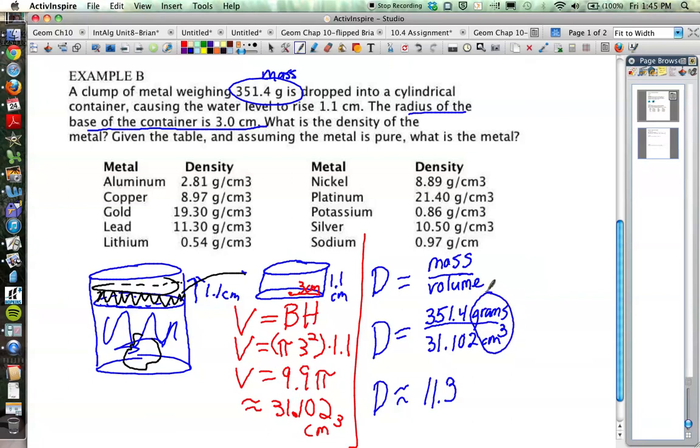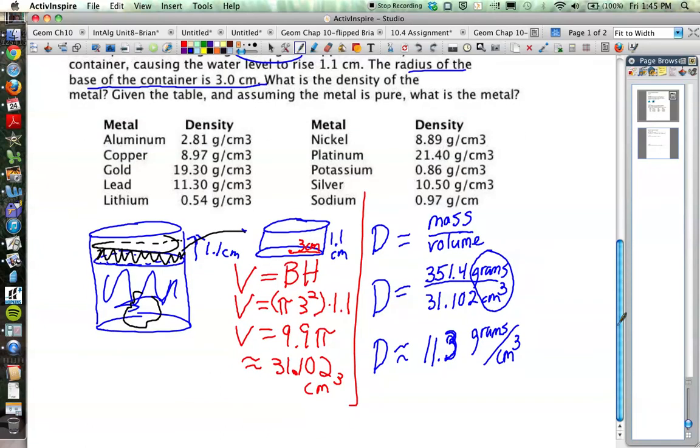I also divide the units. The units don't cancel out here. Grams divided by centimeters cubed, we just keep as grams per cubic centimeter. That's what a density is going to be. It's a unit of mass per unit volume. So grams per cubic centimeter is a very common density unit.